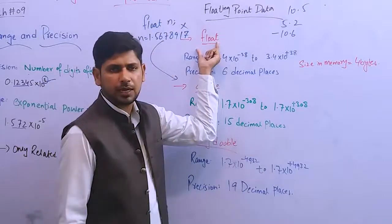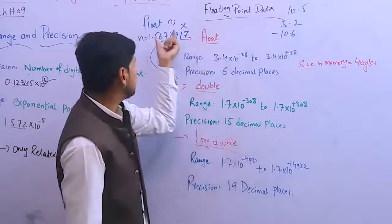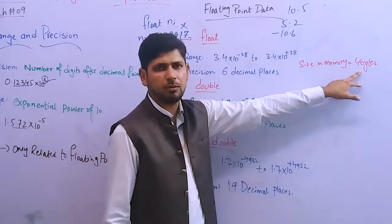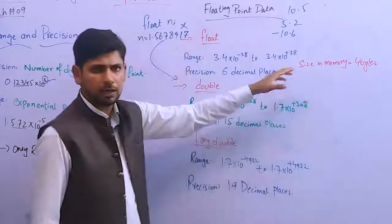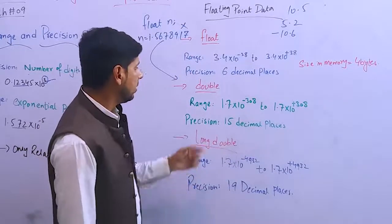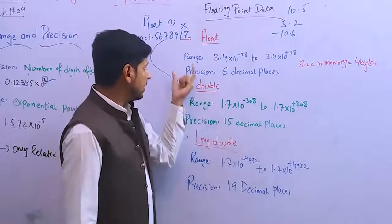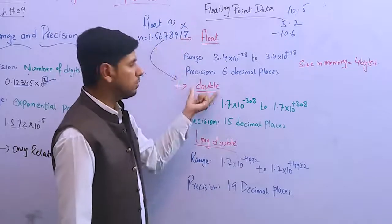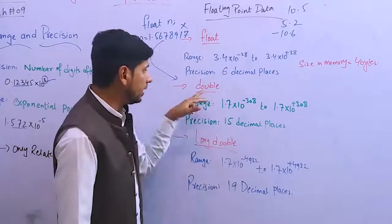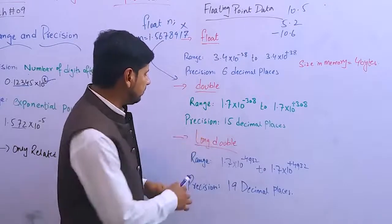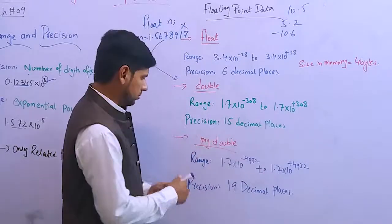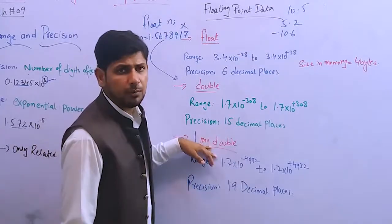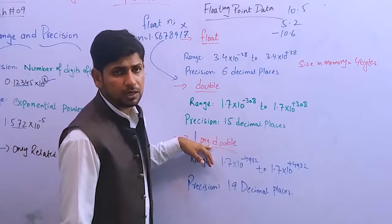Float uses 4 bytes. When we need to store more precision, we use different data types. The size difference is important for practical applications. The range indicates the lower and upper bounds.